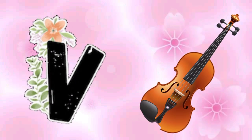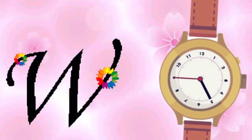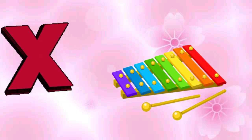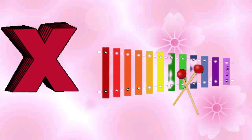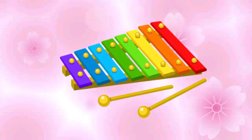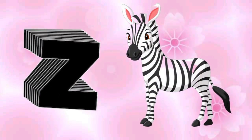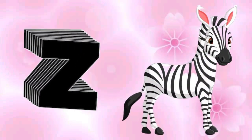U is for umbrella, a-a-umbrella. V is for violin, v-v-violin. W is for watch, w-w-watch. X is for xylophone, z-z-xylophone. Y is for yellow, ye-ye-yellow. Z is for zebra, z-z-zebra.